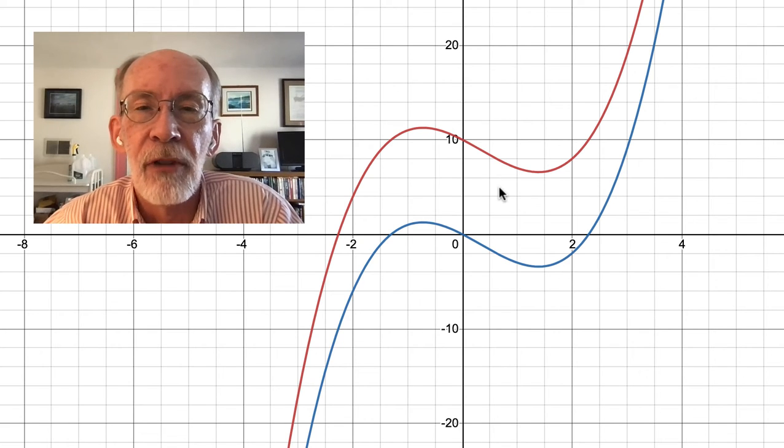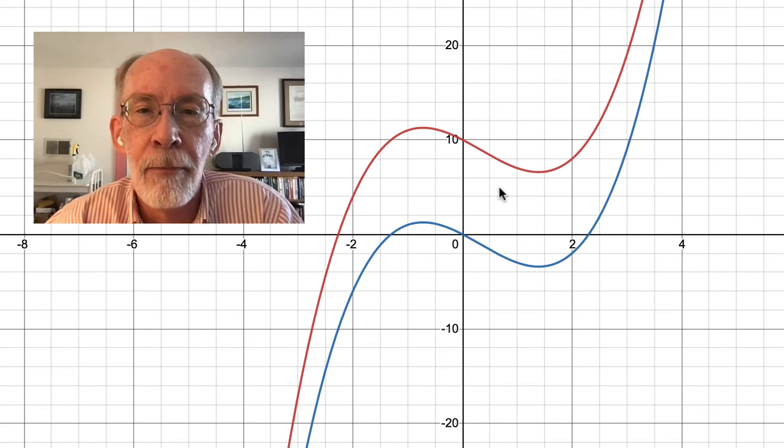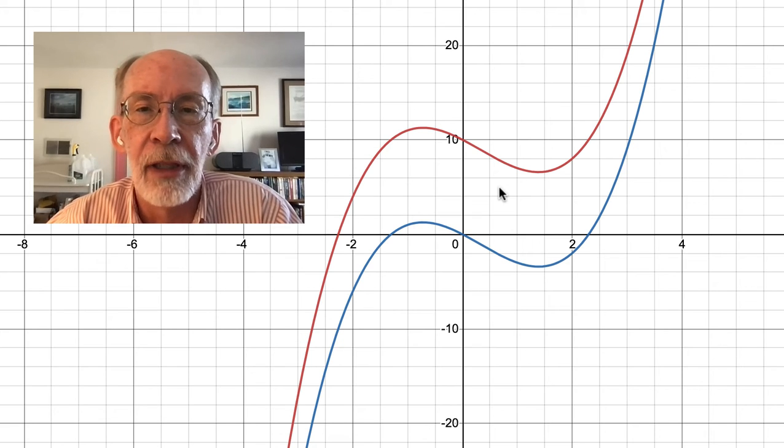We need one piece of background information going into this discussion, and that is as follows. If a function is continuous on closed AB, and if its derivative is zero on the corresponding open AB, then that function is constant on the entire closed interval AB.